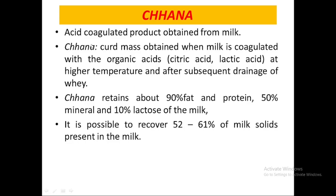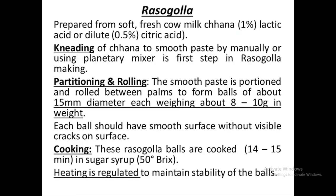When we boil milk and add acid into it, we obtain a curd called chana and whey. About 90% of the fat and protein from the milk is retained inside chana, 50% of minerals appear in chana and 50% in whey, and only 10% of lactose is retained in chana. Usually we recover 52 to 61% of milk solids in chana.